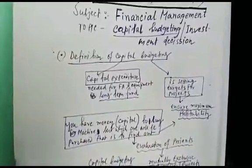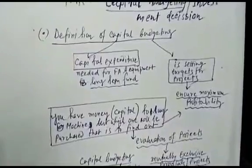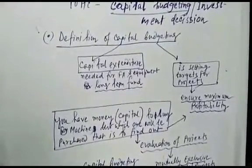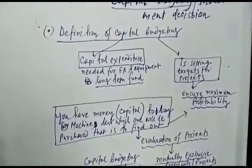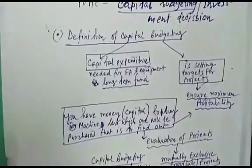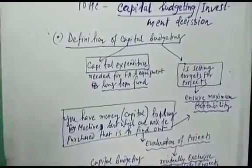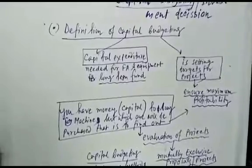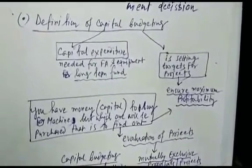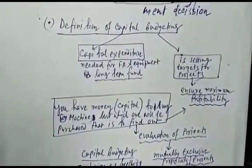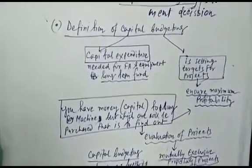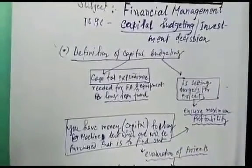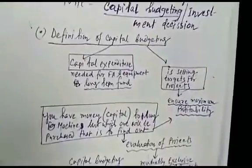First, you need to know what capital budgeting is. There are two words: capital and budgeting. Capital means capital expenditure needed for fixed assets and equipment. You need to buy land, plant, equipment - you need long-term funds. Budgeting means setting targets for projects.